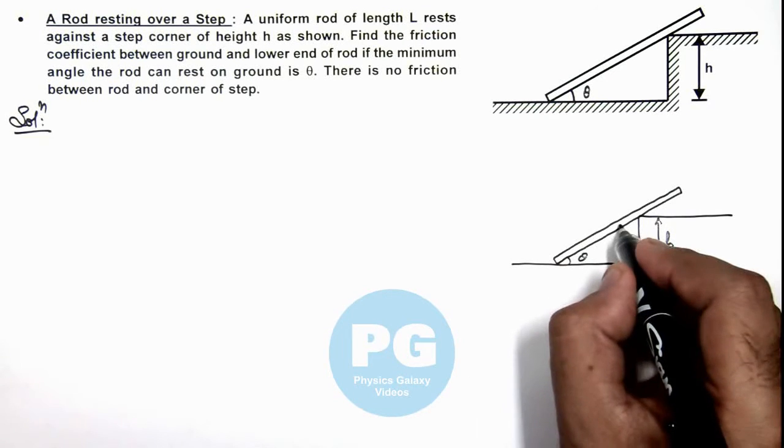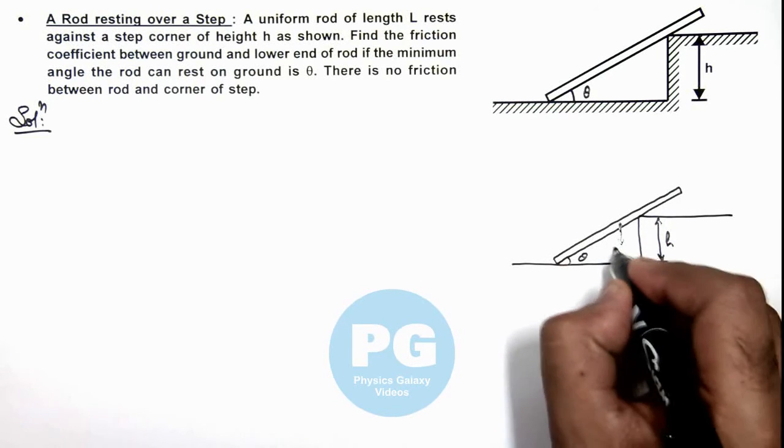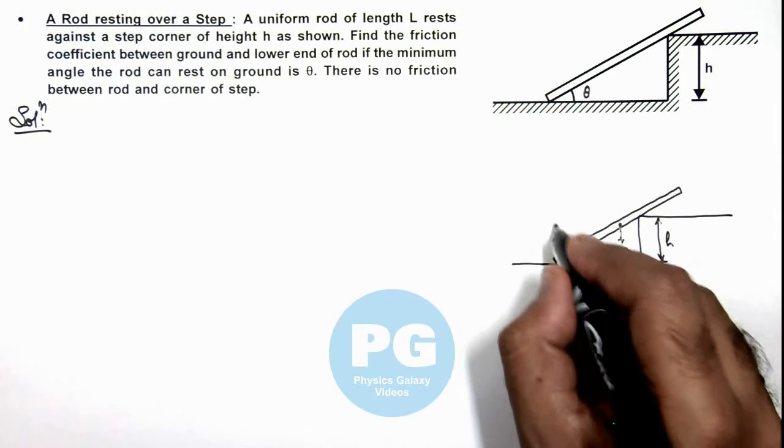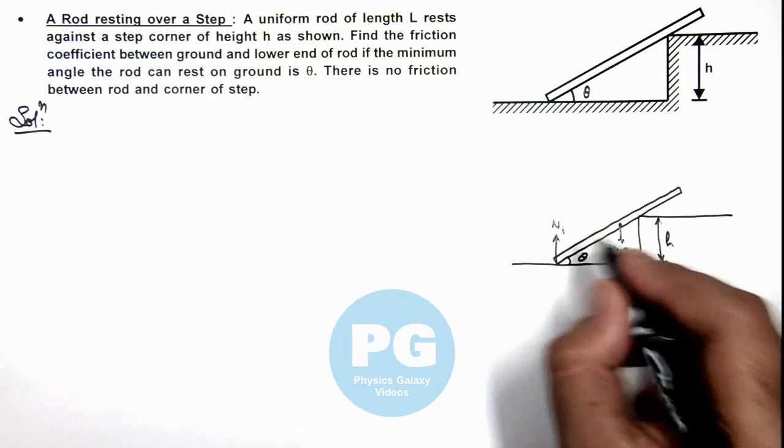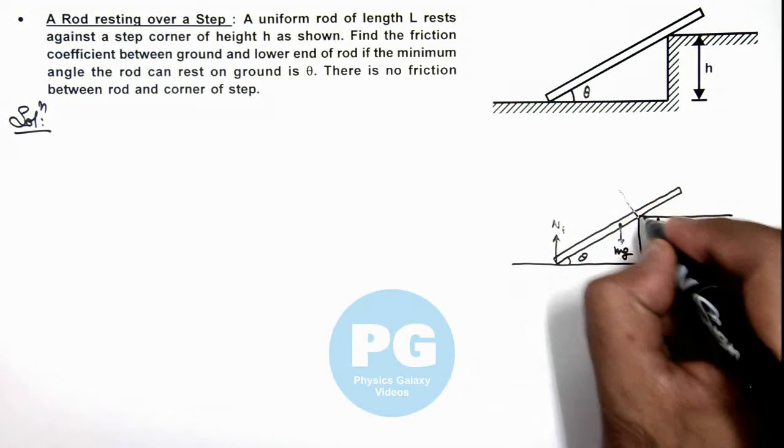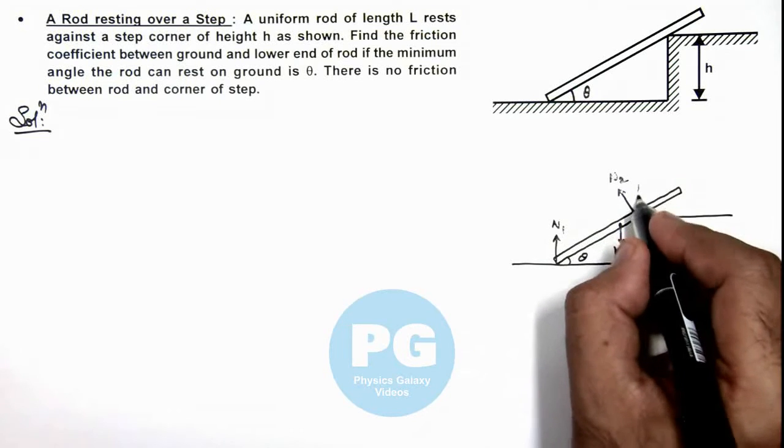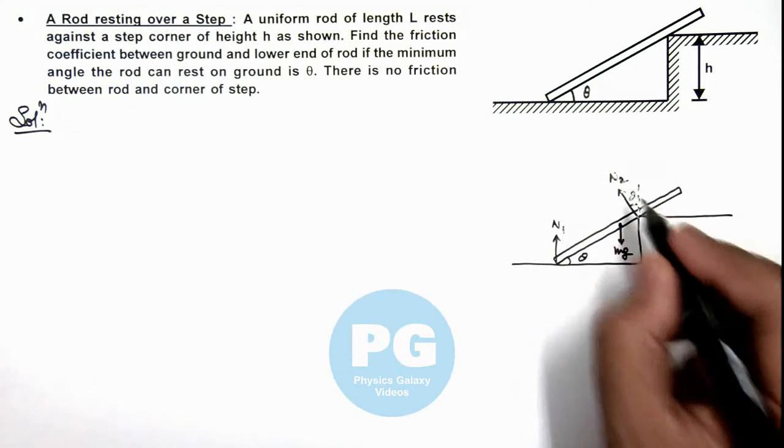And at midpoint a force mg is acting on it, and a normal reaction is acting here as N1, and a normal reaction acting on the other edge is N2. So from vertical also this angle would be theta.